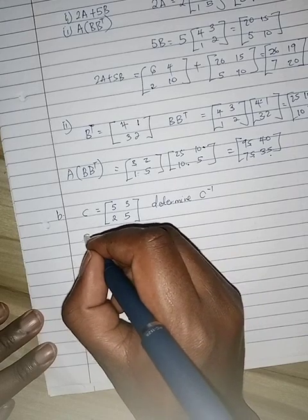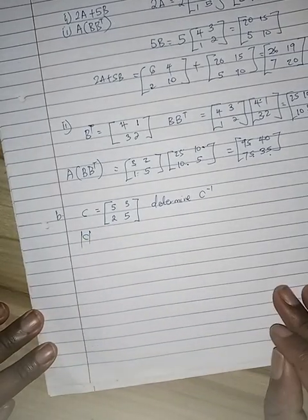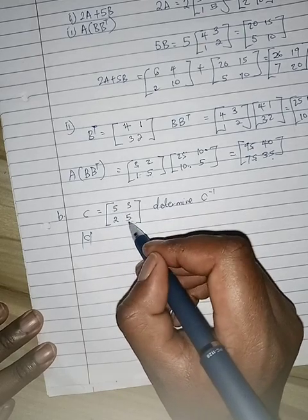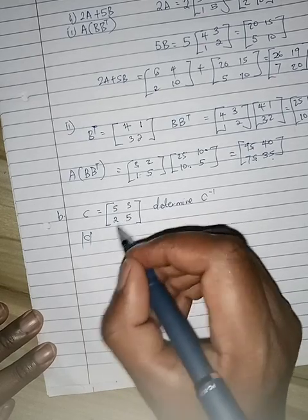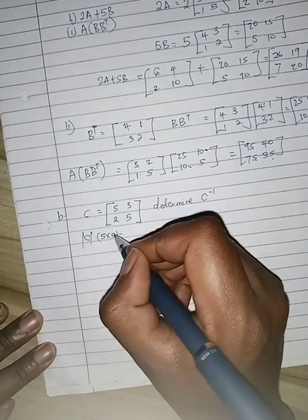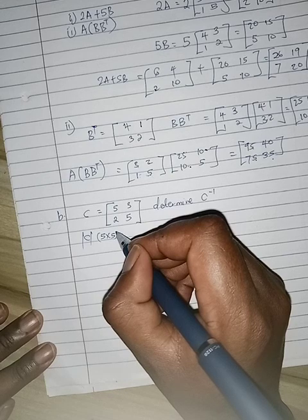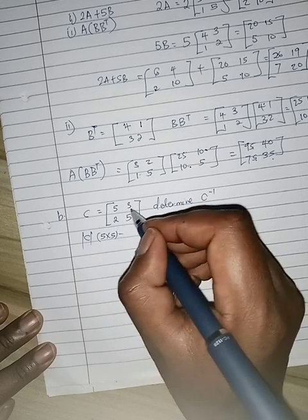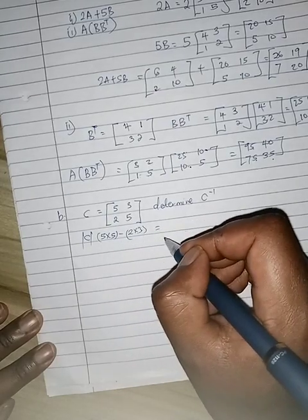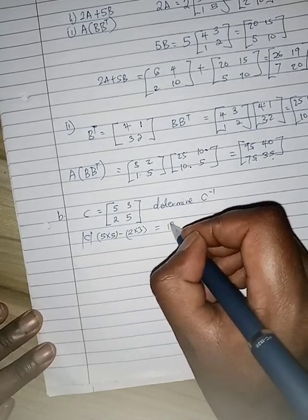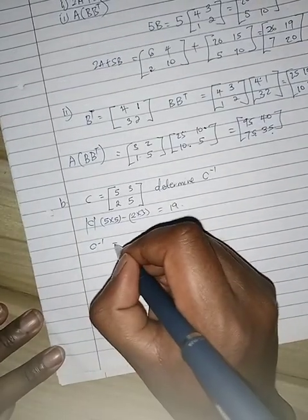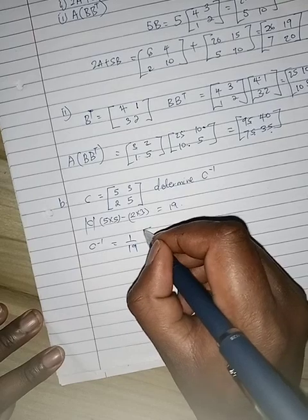In order to get the inverse, you first have to get the determinant. So the determinant is you multiply this, then it's 5 times 5 minus this, 2 times 3, which is basically 25 minus 6, which is 19.